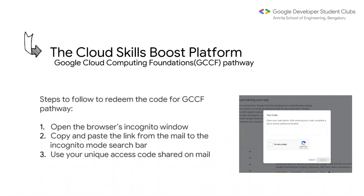To get your credits, open the browser's incognito window. In your registered mail there'll be a link — copy that link and paste it in incognito mode. Once you enter, you'll be asked for a unique access code. Go back to the mail and find your unique access code — it is just for you, so please don't give it to someone else, as their registered ID is different. After entering your code, click 'I'm not a robot' and submit.